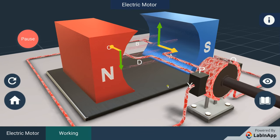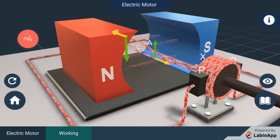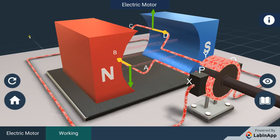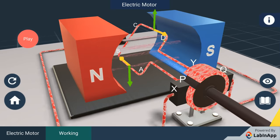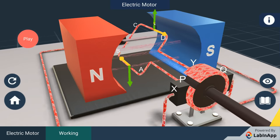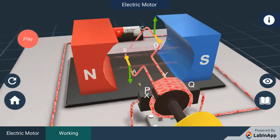We find that the force acting on arm AB pushes it downwards while the force acting on arm CD pushes it upwards. Thus, the coil mounted free to turn about an axis rotates anticlockwise.